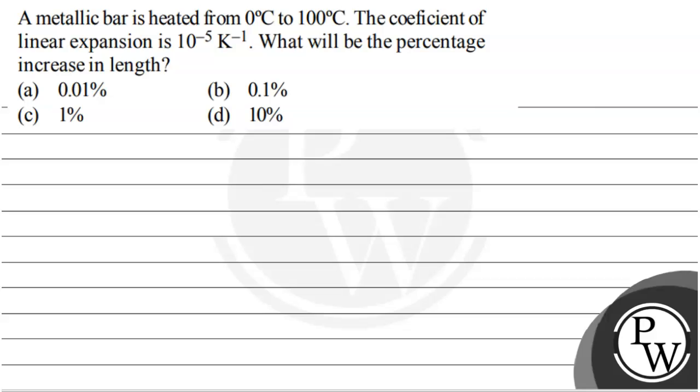For this you need to understand the key concept first. The key concept is the thermal strain, that is delta L to the original length L. Thermal strain is alpha into delta T.